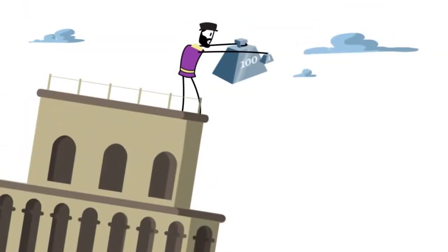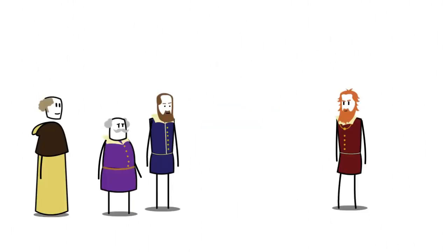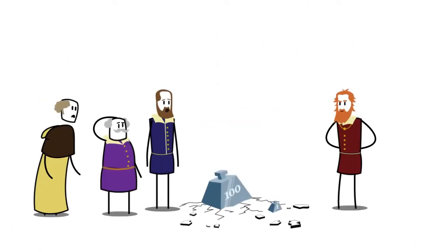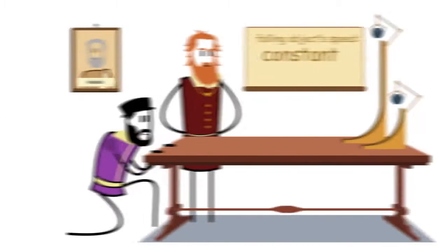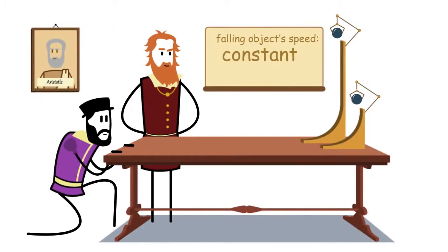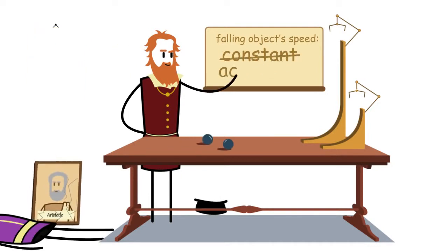But by putting this hypothesis to test, Galileo proved that all objects fall at the same rate of acceleration. Aristotle claimed that falling objects maintain a constant speed. Galileo proved that speed increases in proportion to the distance of the fall.